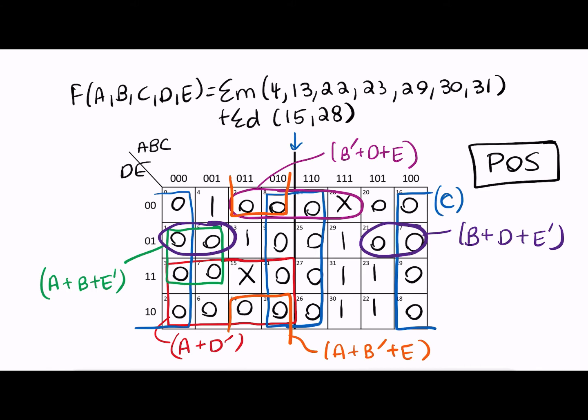The first one is that pretty straightforward burger, so 16, 17, 20, 21, where A is equal to 1, B is equal to 0, C changes, and D is equal to 0.